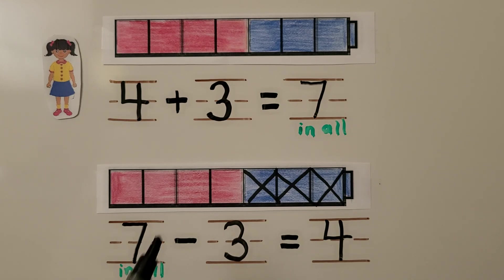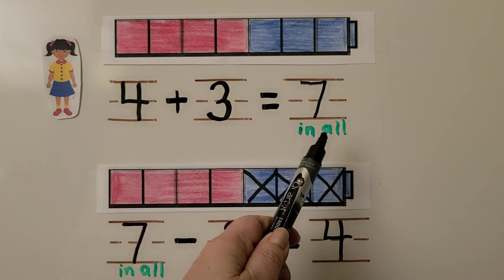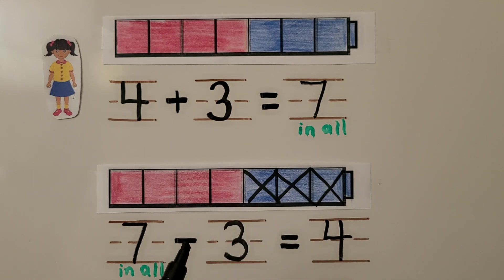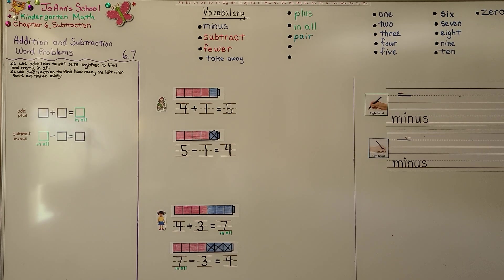So remember: when we're adding and we have a plus sign, the number in all is over here. And when we're subtracting and we have a minus sign, the number in all is over here — it's first. We're finished with chapter six about subtraction. We're going to move on to chapter seven and learn about the numbers 11 through 19. I hope you'll join me and I hope you have a wonderful day. Bye.